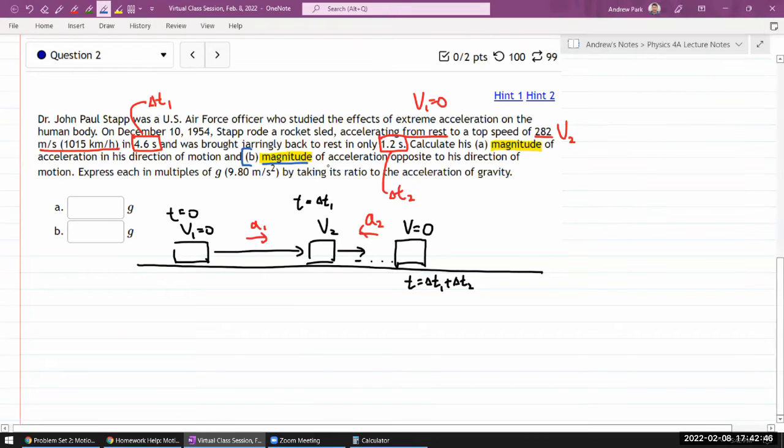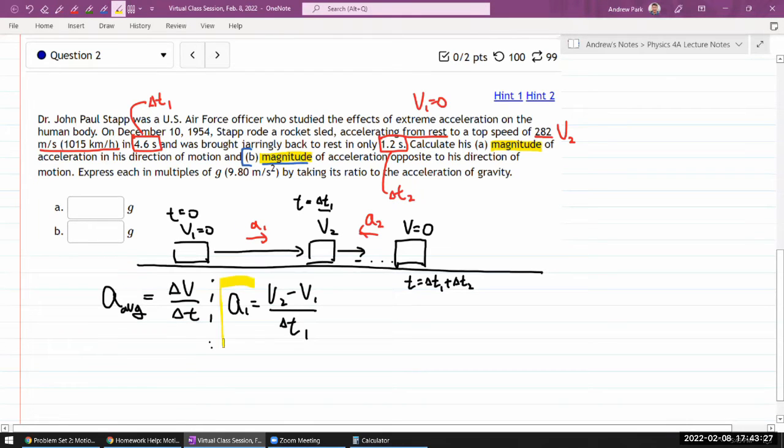So we use the definition of acceleration. We say okay, acceleration, the average acceleration, is the change of velocity over time, the rate of change of velocity. So for my a1, it's going to be my change of velocity, that would be v2, the speed I reach, minus v1, but that's zero, divided by amount of time it takes for the change, delta t1. So I think I can plug in the numbers and do that. I will do that on a calculator all at once, but this is the expression I'll be using for a.